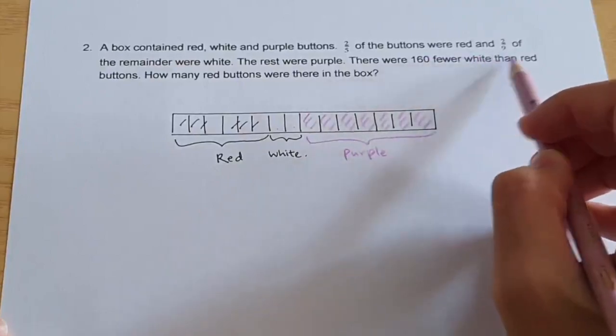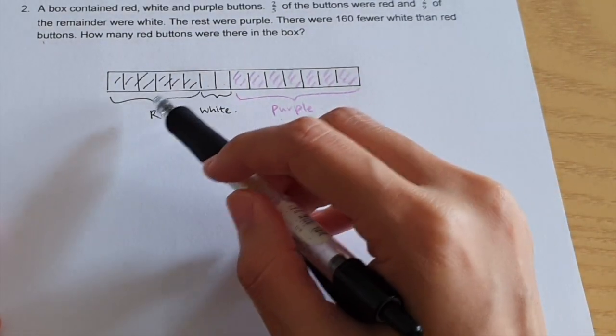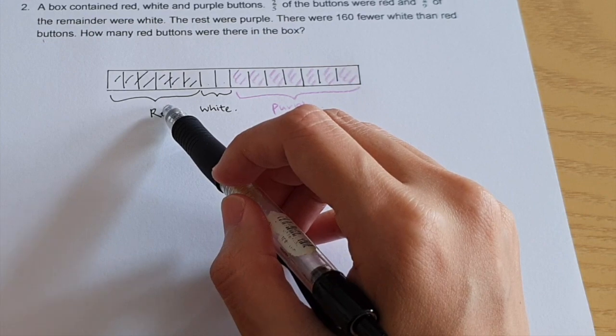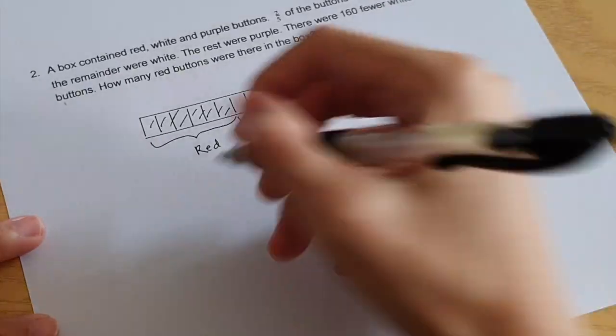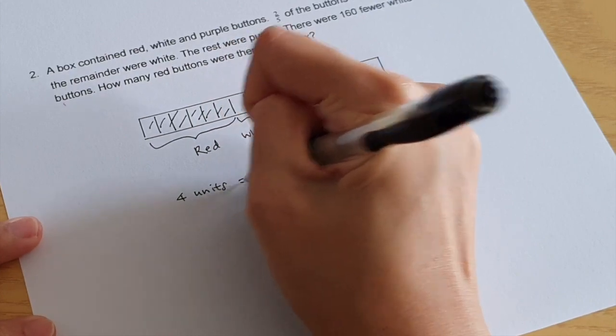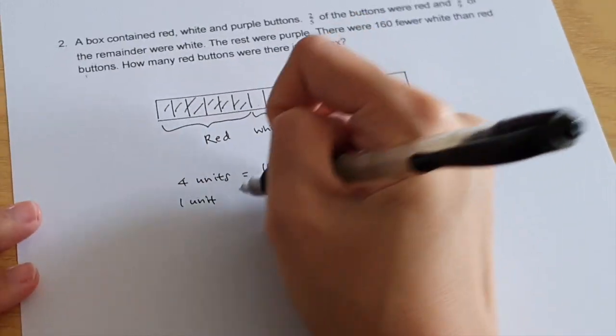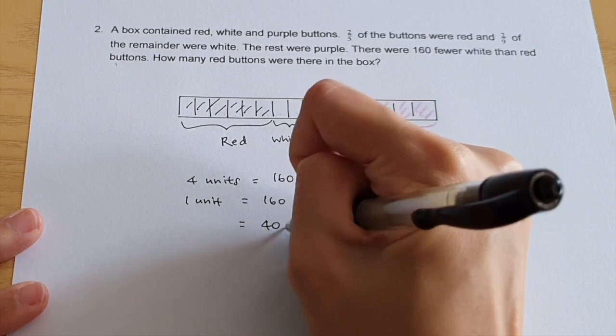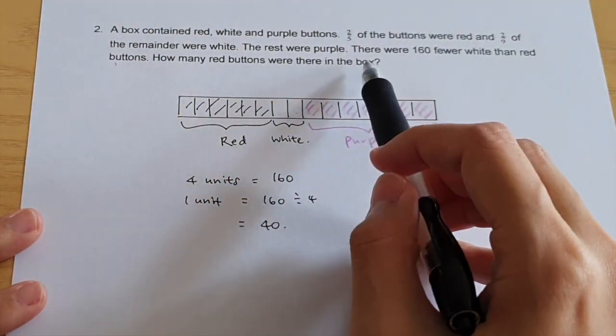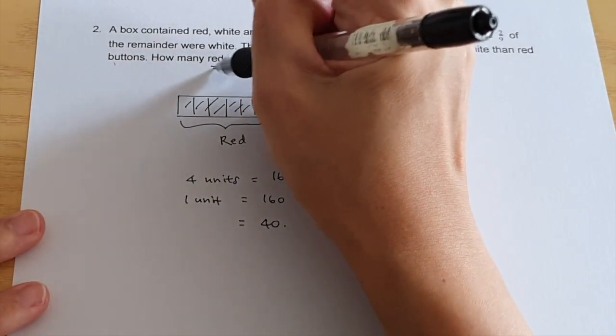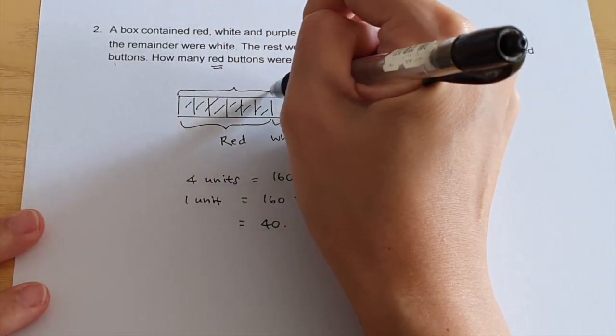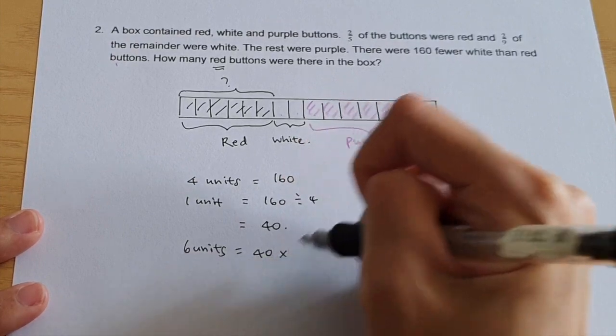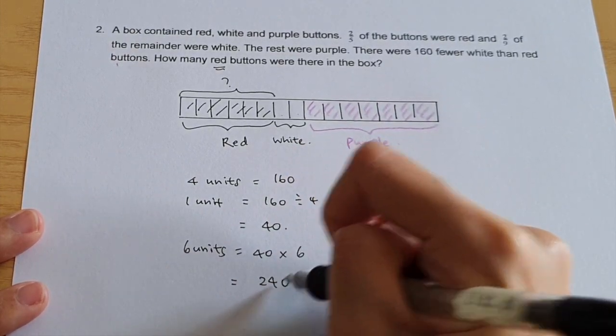There were 160 fewer white than red buttons. So comparing the white buttons and the red buttons. Two units for white buttons and six units for the red buttons. I have four more units for the red buttons. One unit equals to 160 divided by four, which is equal to 40. How many red buttons were there in the box? So I'm looking for red buttons, which is here. Six units equals to 40 times six equals to 240.